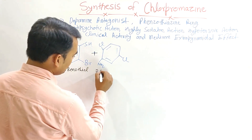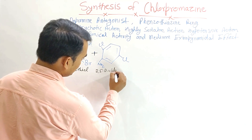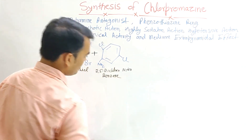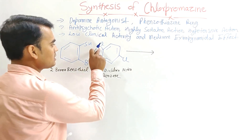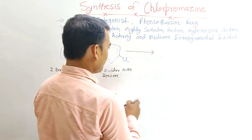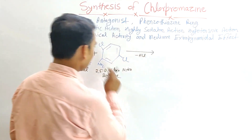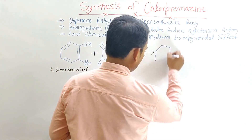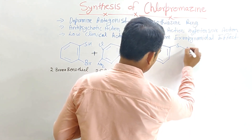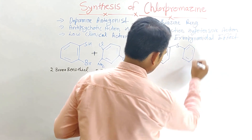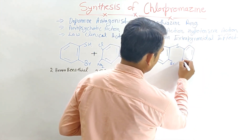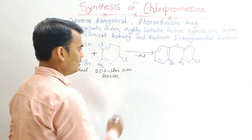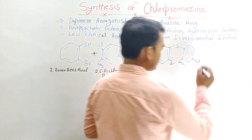So, 2-bromobenzthiol when reacted with 2,5-dichloronitrobenzene — the chloride removes a hydrogen ion in the form of HCl, and the benzene ring attaches to the sulfur group. The intermediate compound now has: a sulfur linkage, a bromine group, a nitro group, and a chlorine group attached.